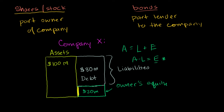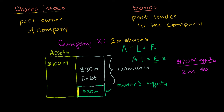For example, if Company X has 2 million shares, and the equity is really worth $20 million, how much is each share worth? We have $20 million of equity divided by 2 million shares, which gives us $10 of equity per share. So if we believe all these numbers, each share is worth $10. If someone is willing to sell us a share for less than that, we'd buy it; if someone would pay more, maybe we'd sell.